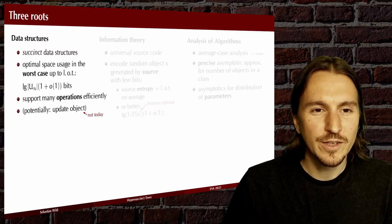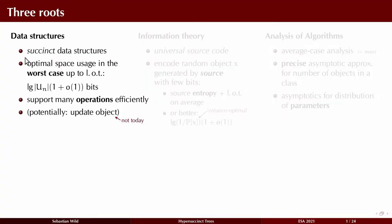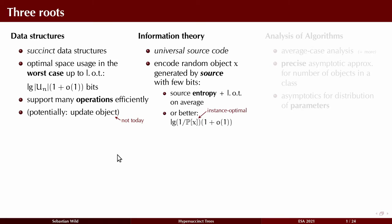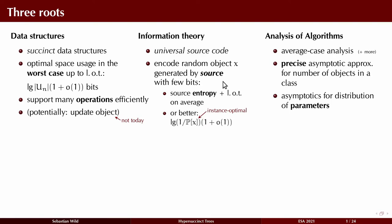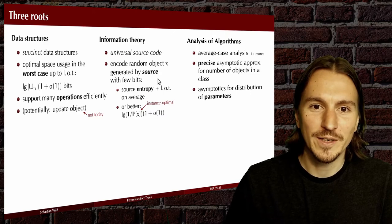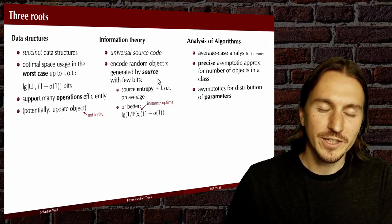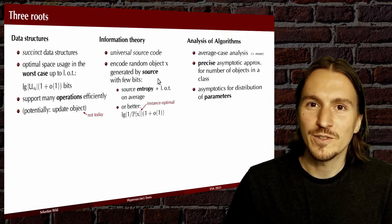This work really has three fields that it brings together. One is data structures, in particular succinct data structures, where we try to store an object in the worst-case number of bits of space, allowing a lower-order term of extra space to support operations efficiently. The second pillar is information theory, where the key object of study is universal source codes — compression methods that are optimal asymptotically for a family of sources that generate random objects. And lastly, the analysis of algorithms, which contributes mathematical tools to analyze combinatorial objects and random distributions of parameters on these objects.